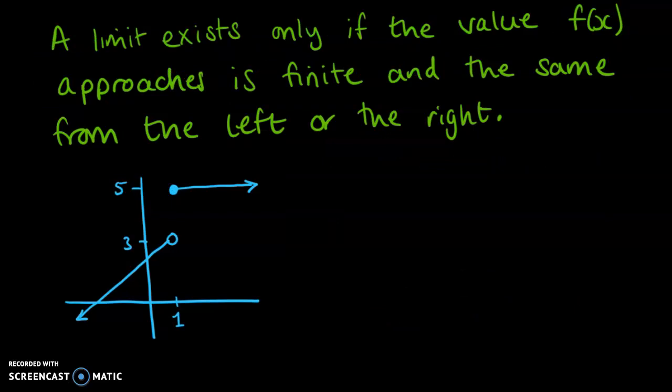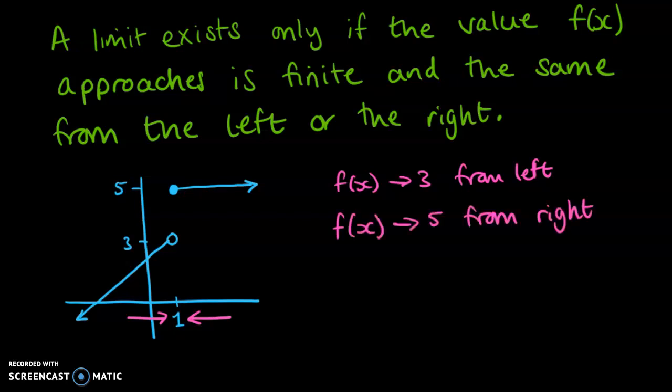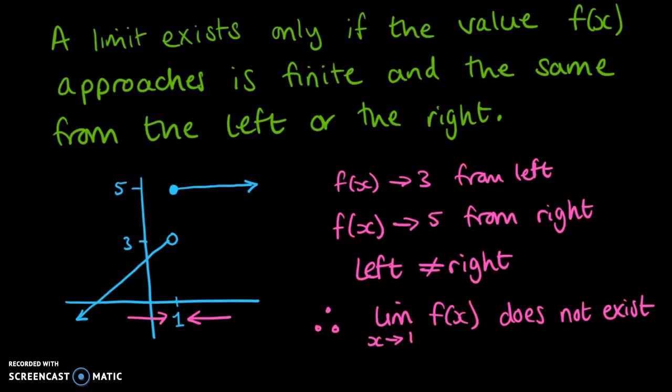So on this one, we've got that f of x is a piecewise function. And if we're looking at this going from the left towards x equals 1, so from the left, we would have f of x is approaching 3 from the left. But from the right, if we were heading towards x equals 1 from the right-hand side of our graph up here, we would be heading towards a different number. We'd be heading towards 5. So f of x is approaching 5 from the right. Now, the left doesn't match the right, so therefore we don't have a limit. And this is how we write it. So the limit as x approaches 1 of f of x does not exist.